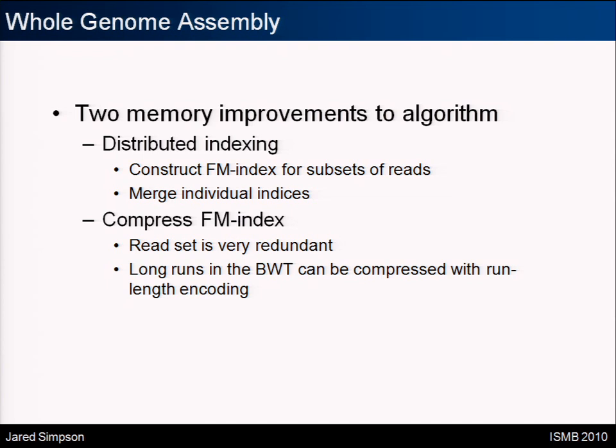To lower the memory requirements, we've done two things. First, we implemented distributed indexing. As mentioned, we had to build a suffix array to get the FM index. Now we build it in parallel — first indexing a subset of five or ten million reads, then merging the indices together. This is a disk-based approach so you don't need much information in memory at once, making it more efficient than doing the entire suffix array at once.